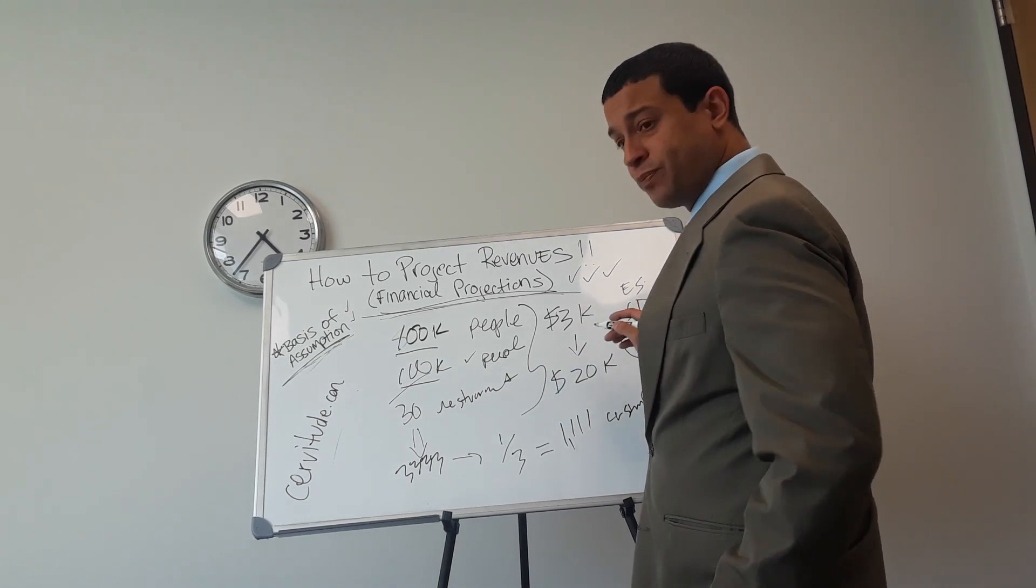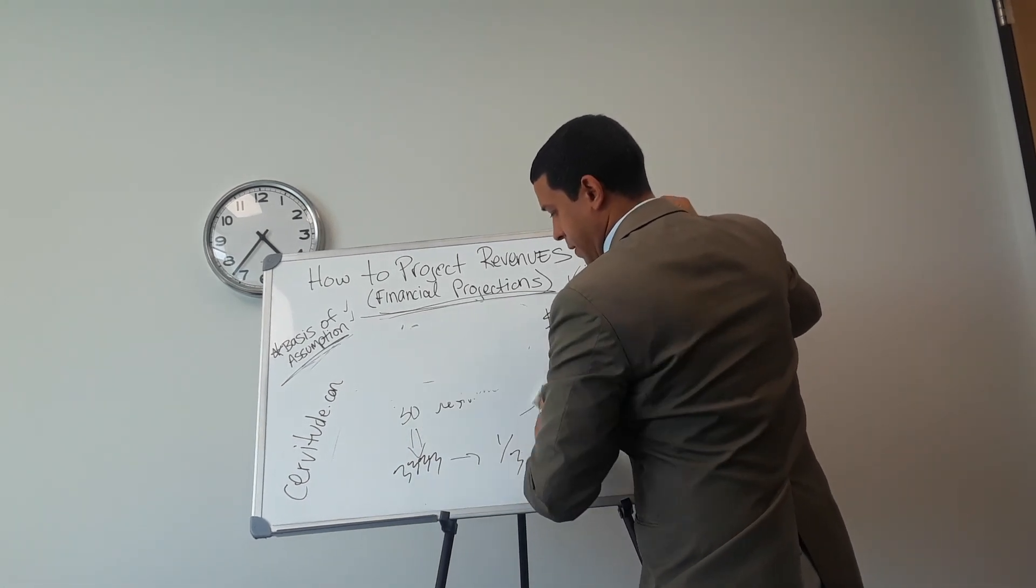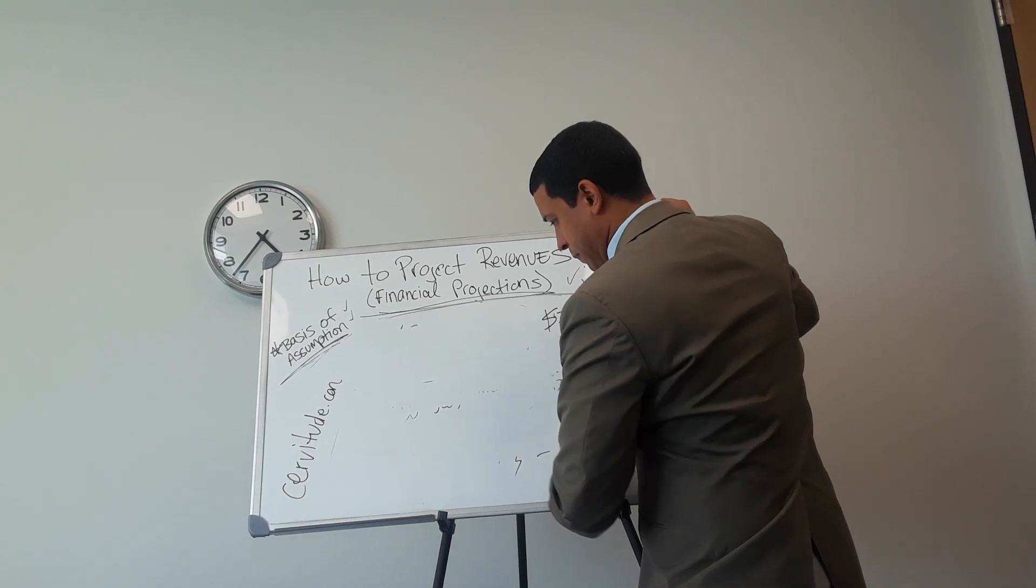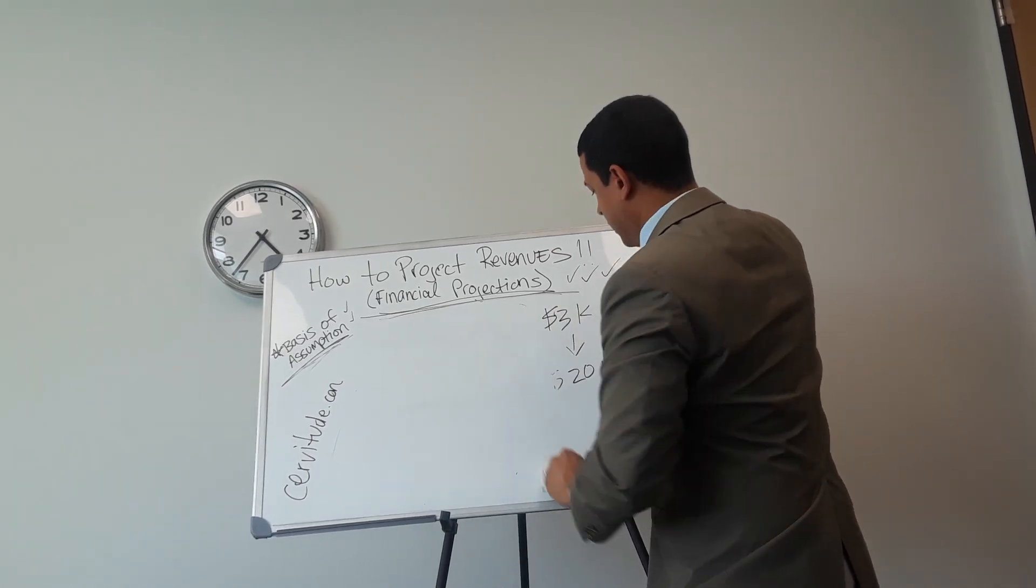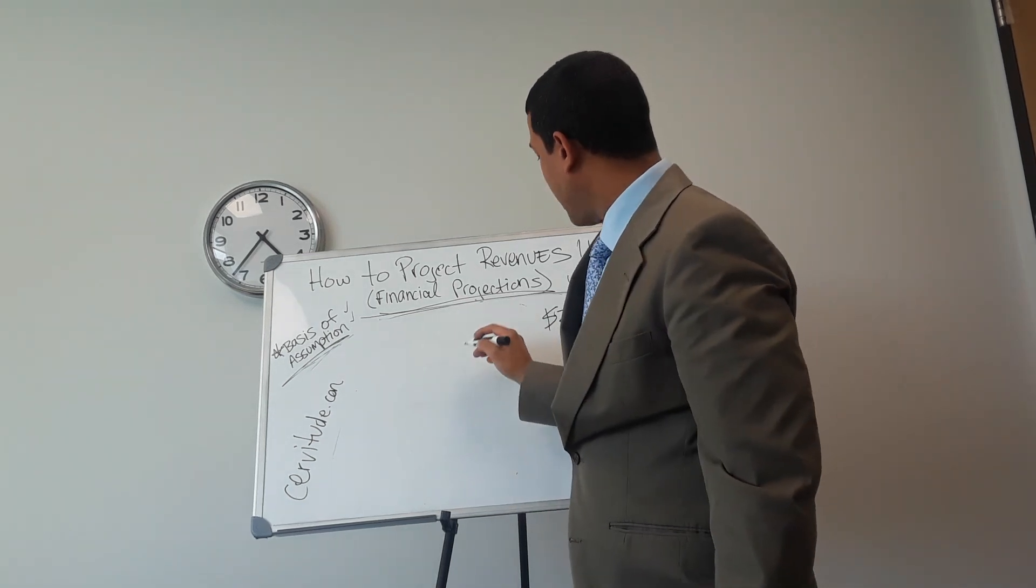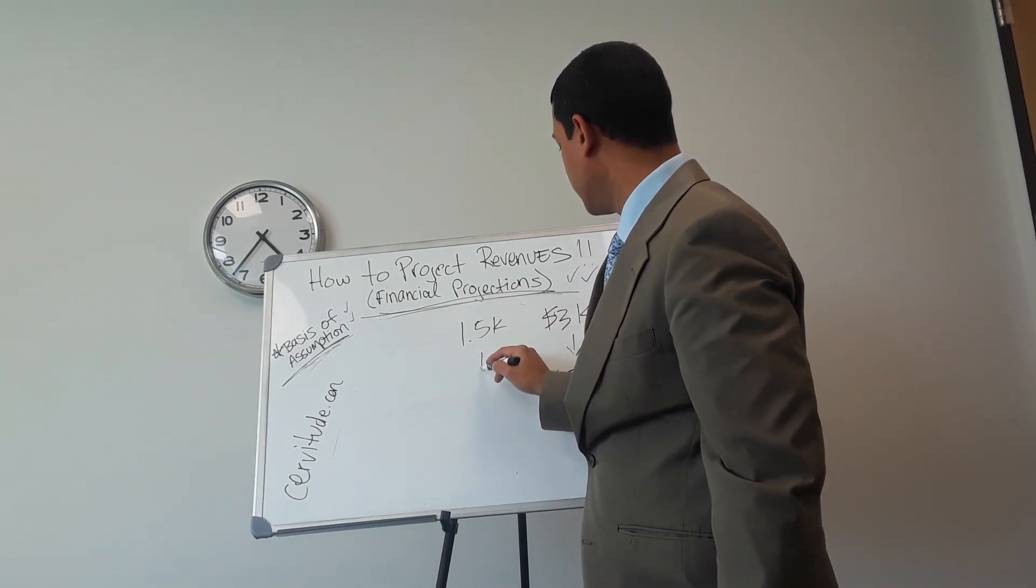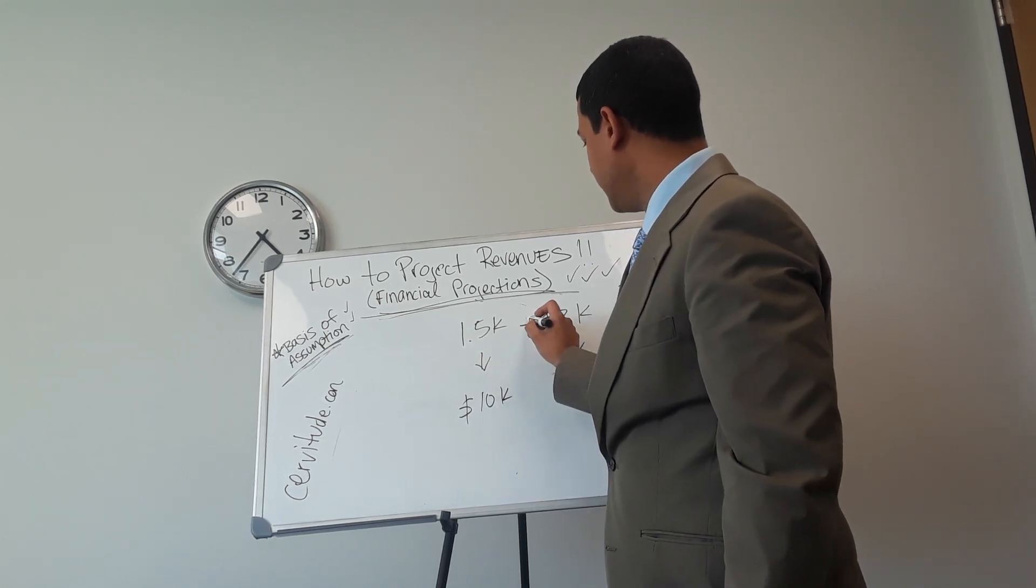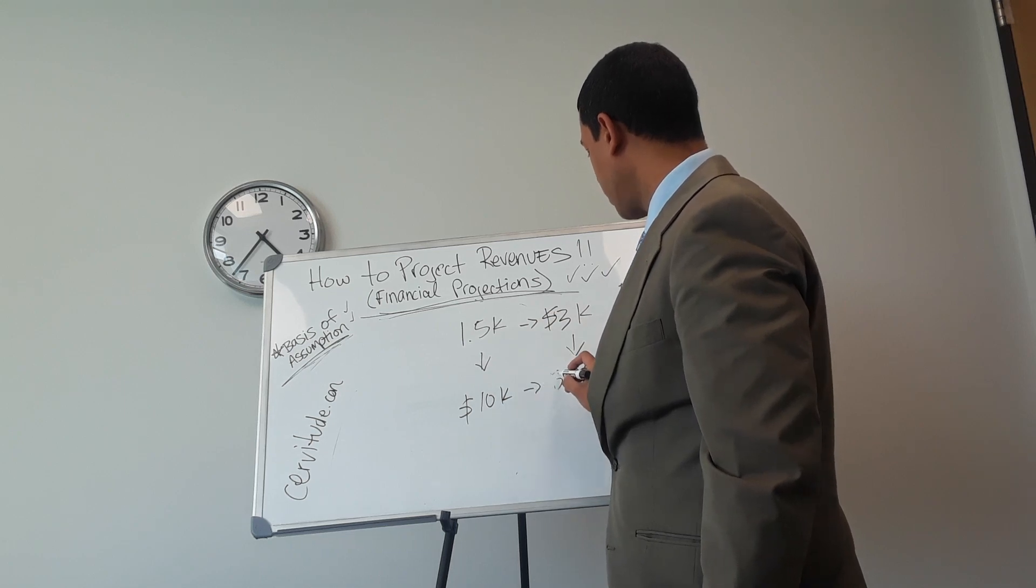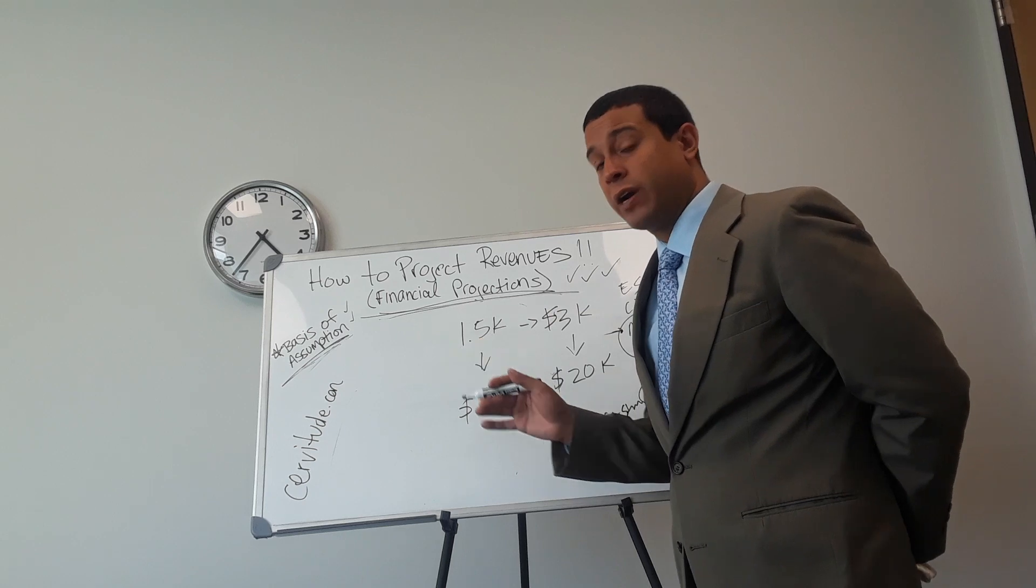The month before, let's say I spent $1.5k on marketing and I made $10,000. Then the next month, I spent $3,000 on marketing and I made $20,000. This is a mathematical formula you want to get to. As a startup, you don't know this formula.